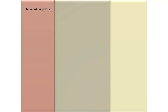Porphyrias are of two types: genetic and acquired. Genetic porphyria occurs if there is a complete or partial deficiency of enzymes related to the heme synthetic pathway. Acquired porphyria occurs if any drug or toxin interferes with the heme synthetic pathway.